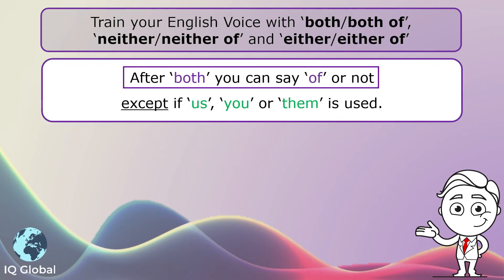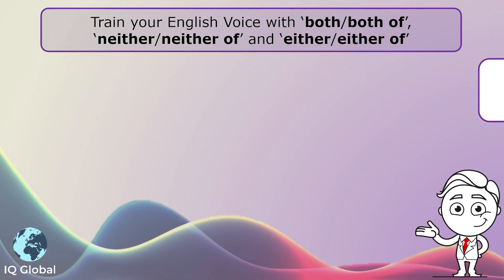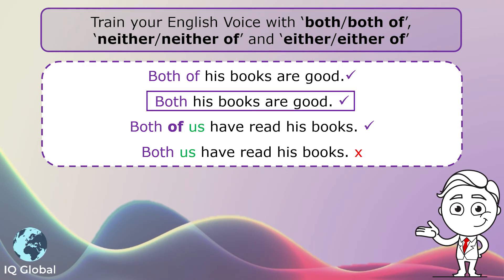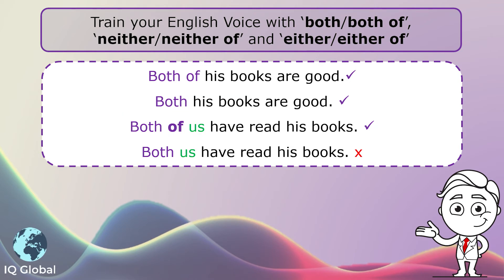After both, you can say 'of' or not, except if us, you, or them is used. Let's look at some examples: Both of his books are good. Both of us have read his books. We don't say 'both us have read his books.'